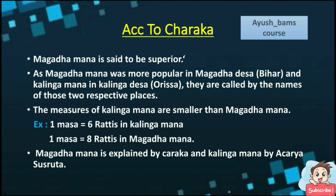According to Charaka, Magadha Mana is said to be superior. Magadha Mana was more popular in Magadha Desha, which is in Bihar, and Kalinga Mana in Kalinga Desha, which is in Orissa. They are called by the names of those two respective places. The measures of Kalinga Mana are smaller than Magadha Mana. For example, one masa is equal to six rathis in Kalinga Mana, whereas one masa is equal to eight rathis in Magadha Mana. Magadha Mana is explained by Charaka and Kalinga Mana by Acharya Shushruta.